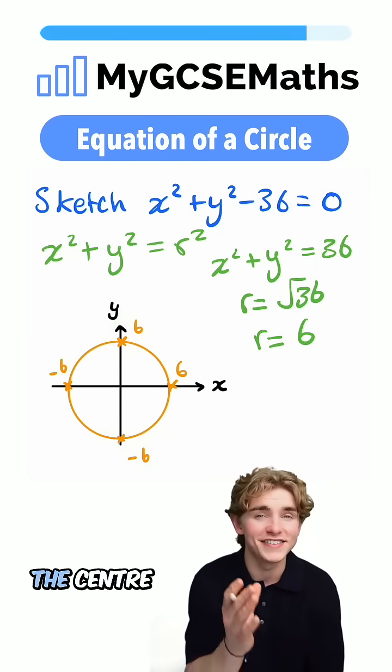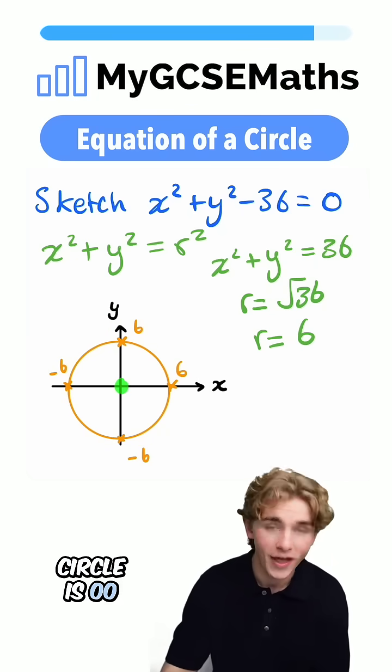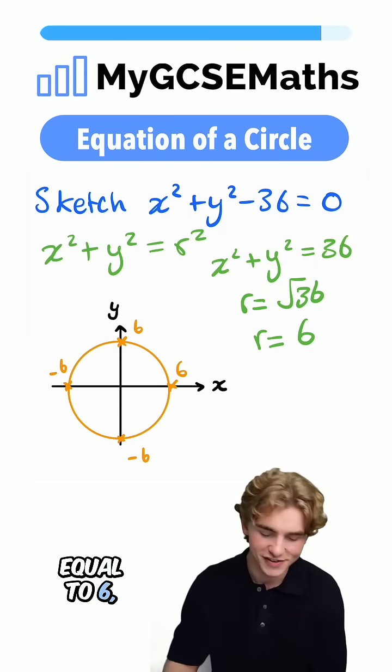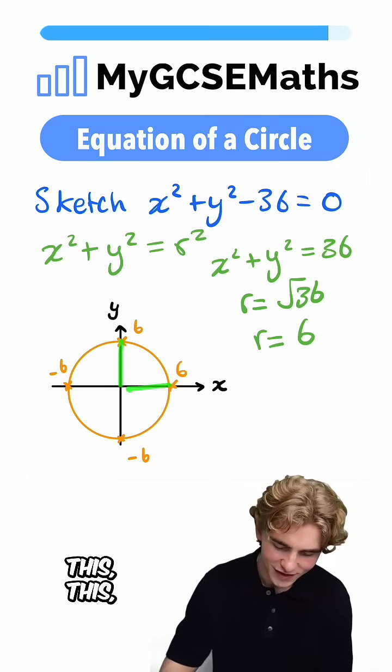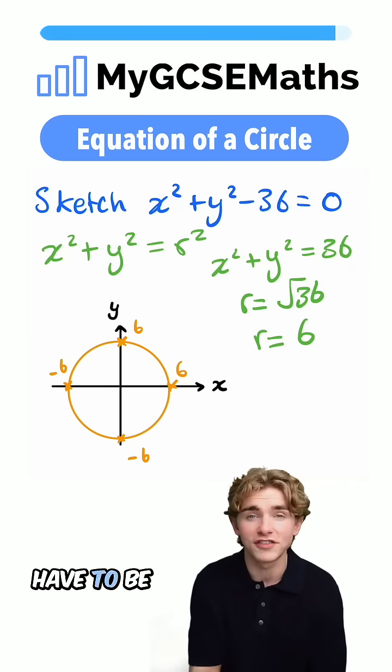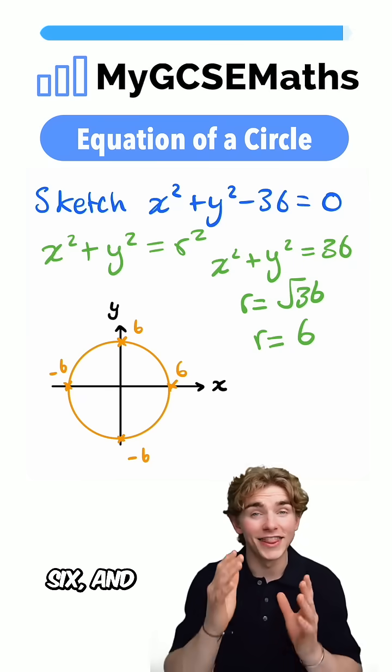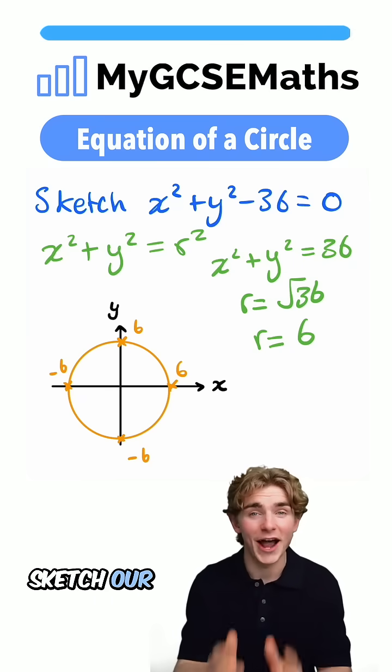Why is that? That's because the center of our circle is (0, 0), and the radius is equal to 6, which means this, this, this, and this all have to be equal to 6. And that is how we sketch our circle.